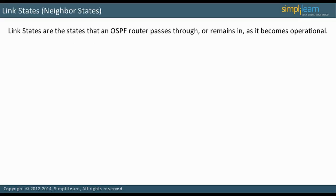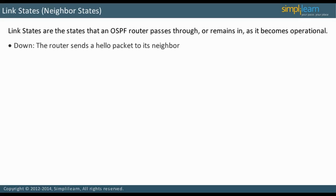Link states are the states that an OSPF router passes through, or remains in, as it becomes operational. Before a router participates in the OSPF process, it is considered down. Once it is enabled, the router sends a hello packet to its neighbor.